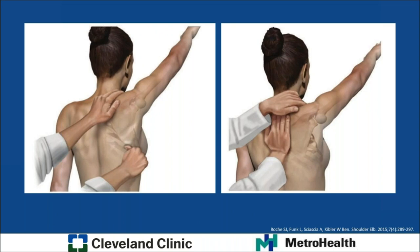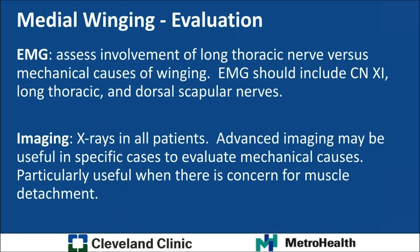A positive stabilization test is when providing scapular stability both decreases pain and increases range of motion. EMG should be obtained in most patients to assess involvement of the long thoracic nerve versus a mechanical cause, show the nature of the nerve injury, and should include the spinal accessory, long thoracic, and dorsal scapular nerves for an accurate and complete diagnosis. All patients should get plain X-rays, and advanced imaging — particularly MRI — may be useful in specific cases, especially to evaluate for muscle detachment.